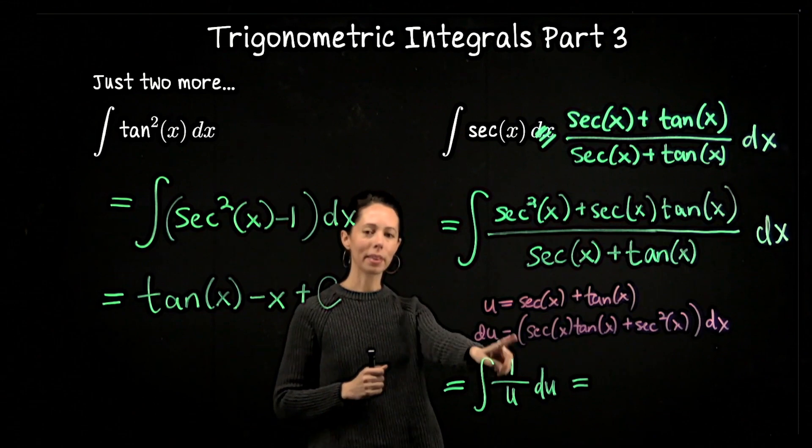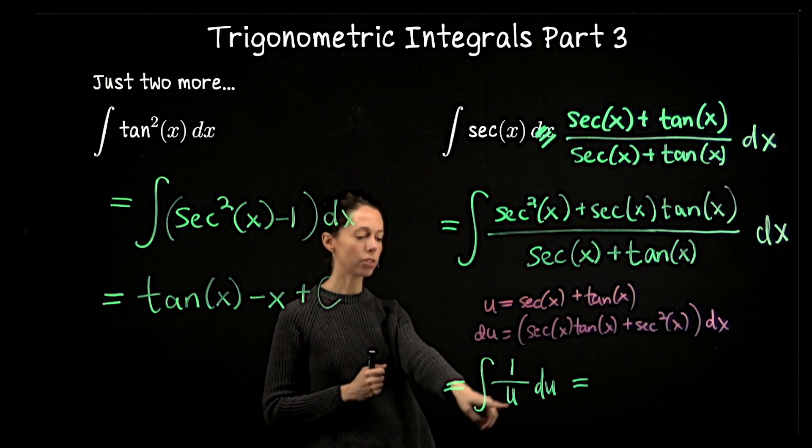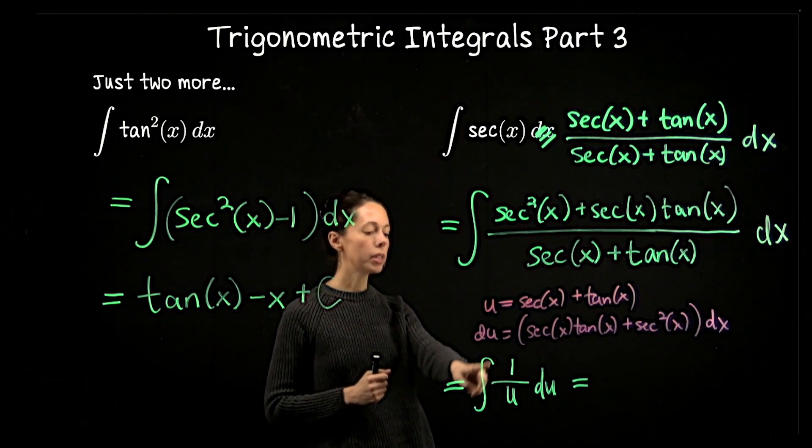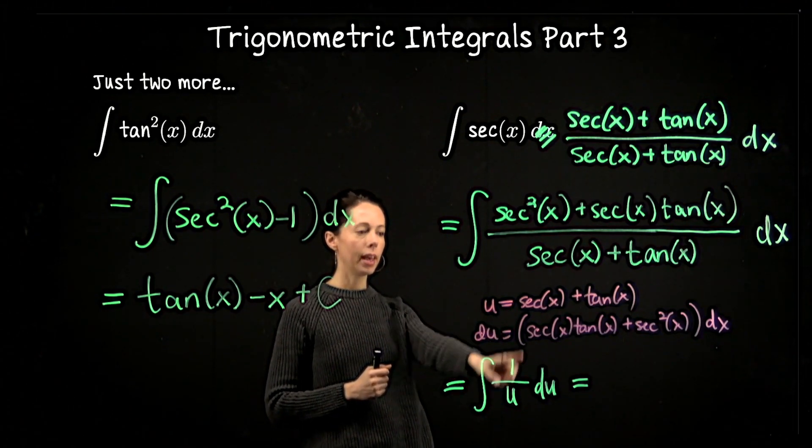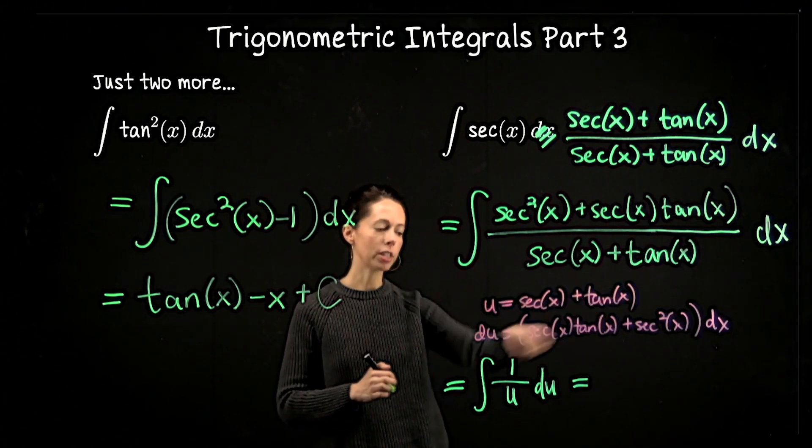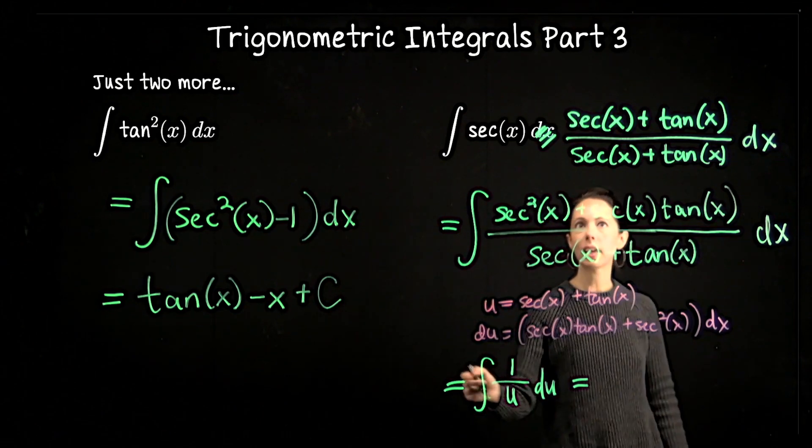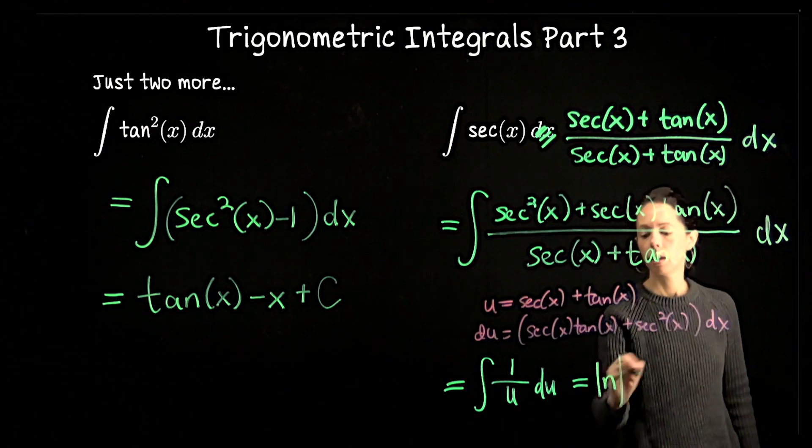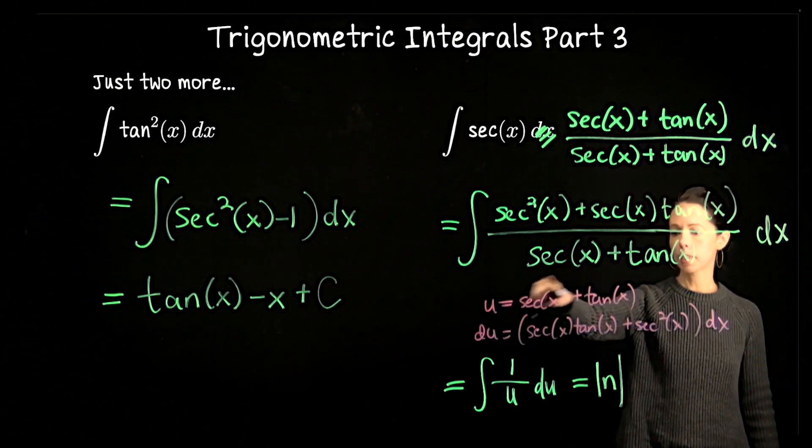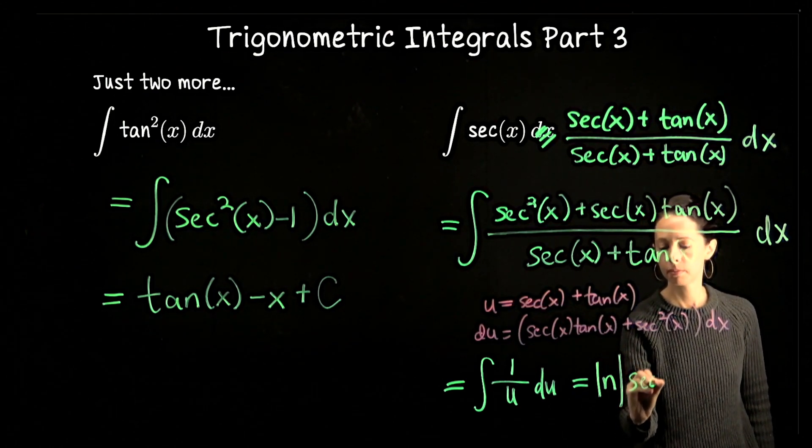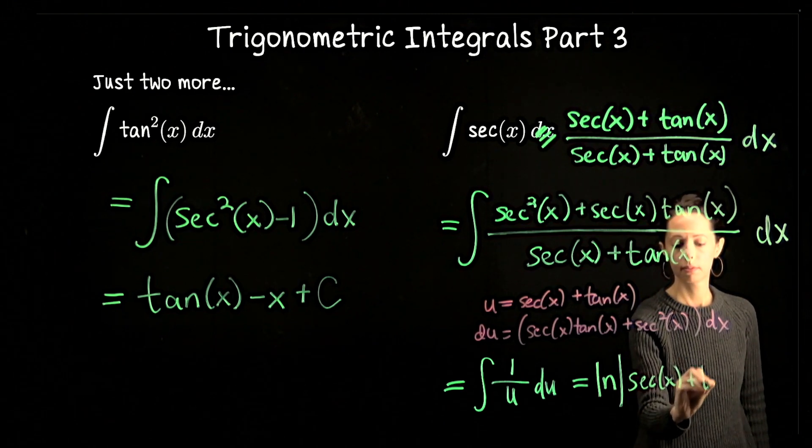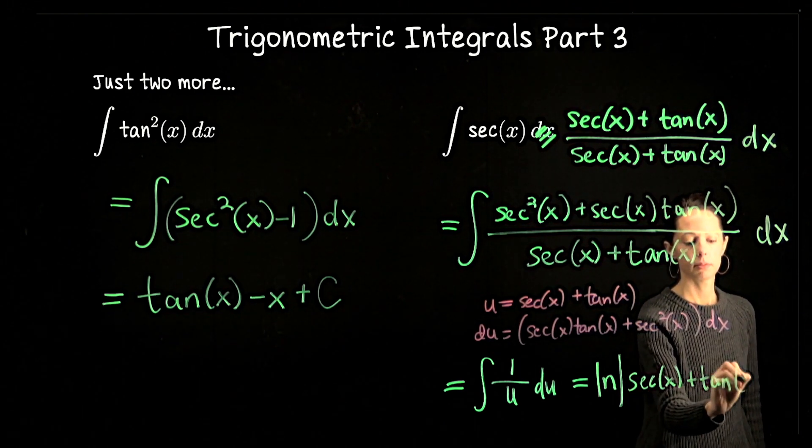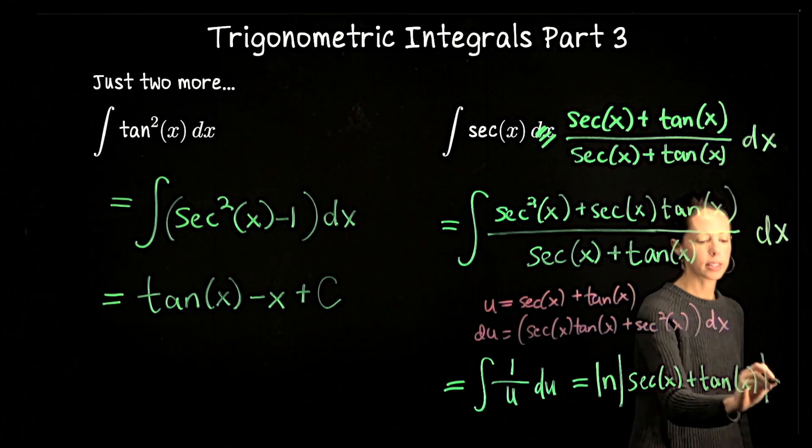Now we can immediately anti-differentiate this with a natural log function. So it's ln|u|, and putting in our expression for u, the antiderivative of sec(x) is ln|sec(x) + tan(x)| + C.